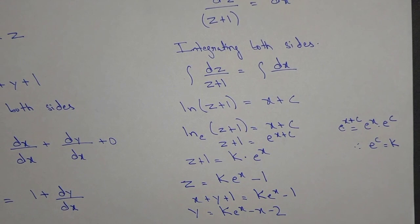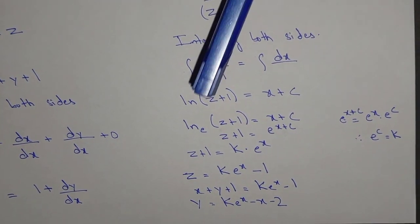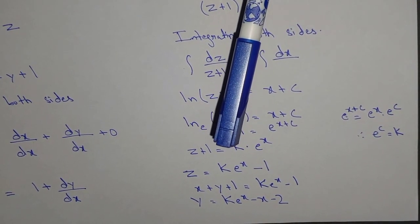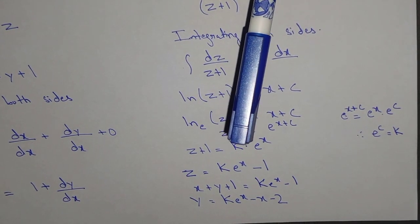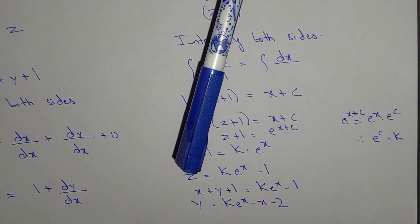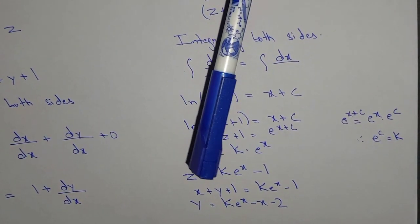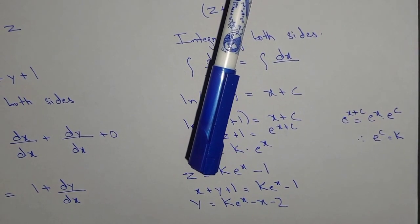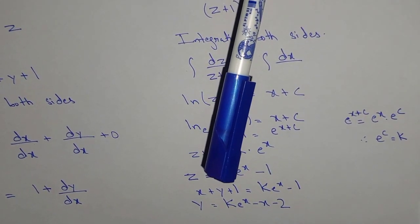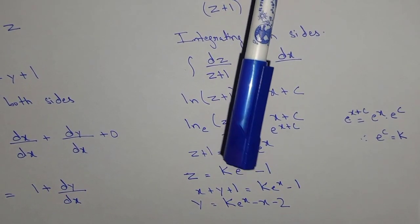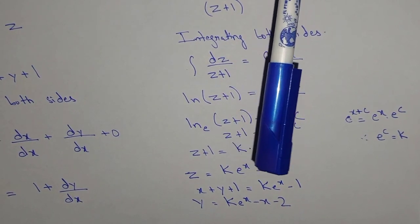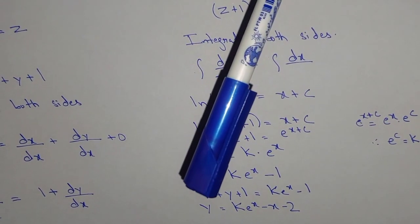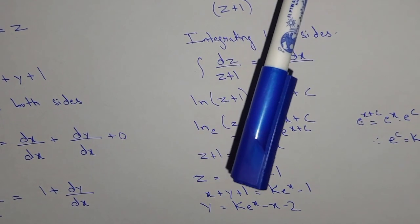We are trying to find the value of y, so z equals k·e^x minus 1. We supposed earlier that z equals x plus y plus 1, so replacing back: x plus y plus 1 equal to k·e^x minus 1.